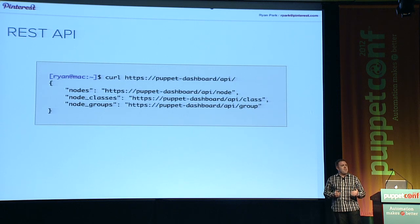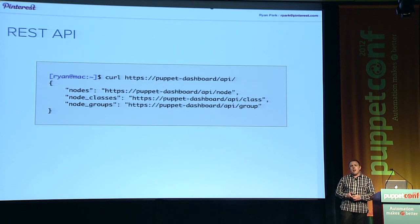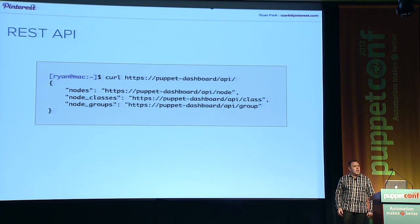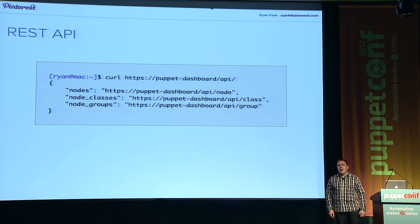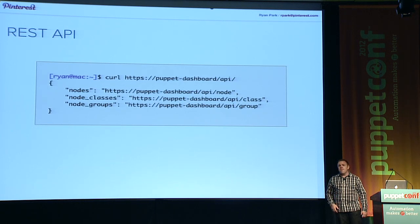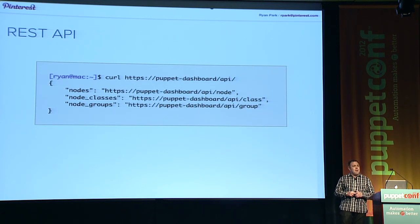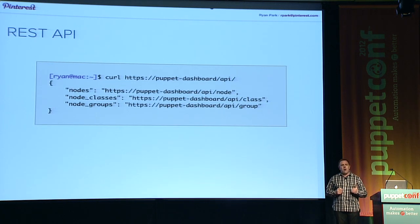We built a REST API to interact with the data in the Puppet Dashboard and the stored configs. The API's output is JSON, which means it's easy for both people and software to understand. The source code to this API is in the code samples we have up on GitHub at github.com/Pinterest. We wrote this in Python because that's the language we know best, and it makes assumptions about our server architecture. But hopefully you can look at the source and get ideas about what might work for you.